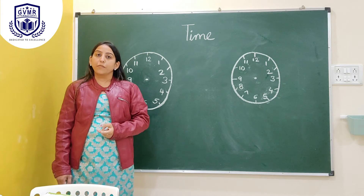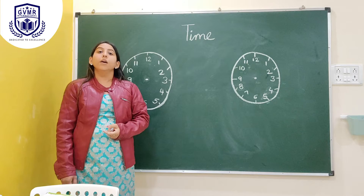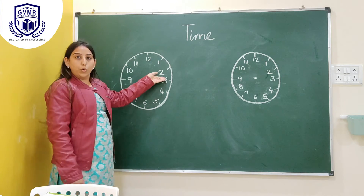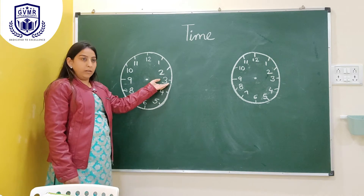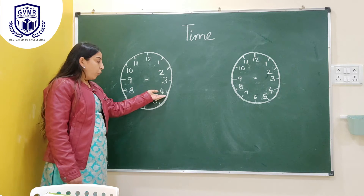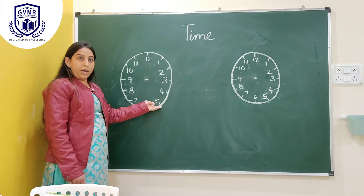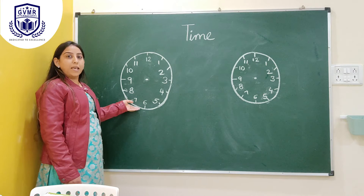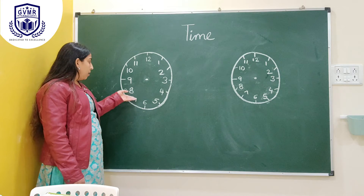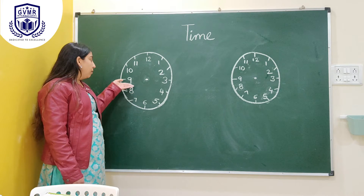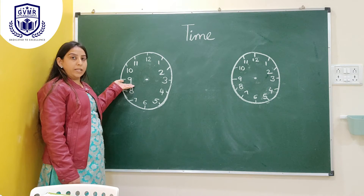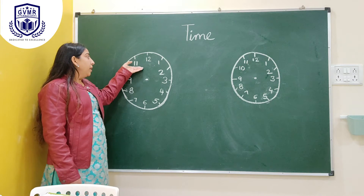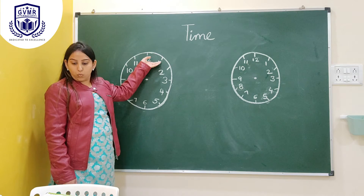How many numbers are there in a clock face? 12. 1, 2, 3, 4, 5, 6, 7, 8, 9, 10, 11, 12.